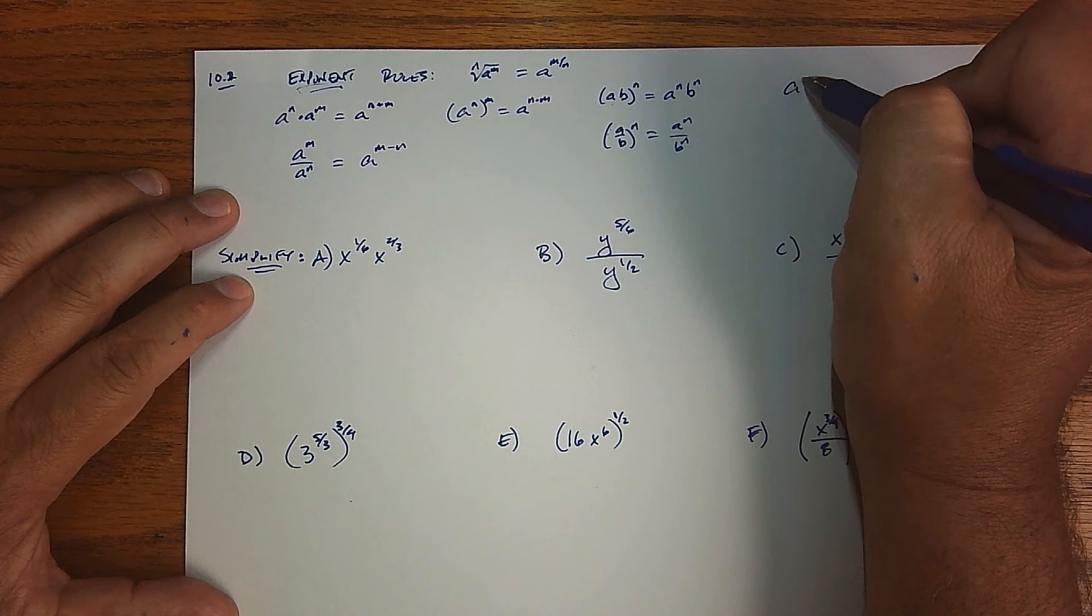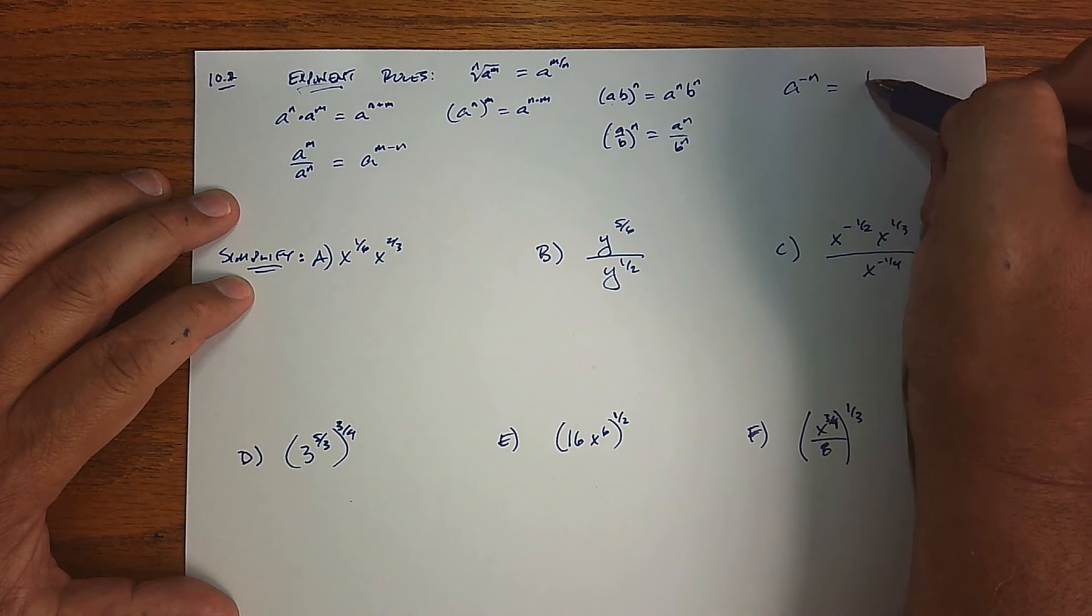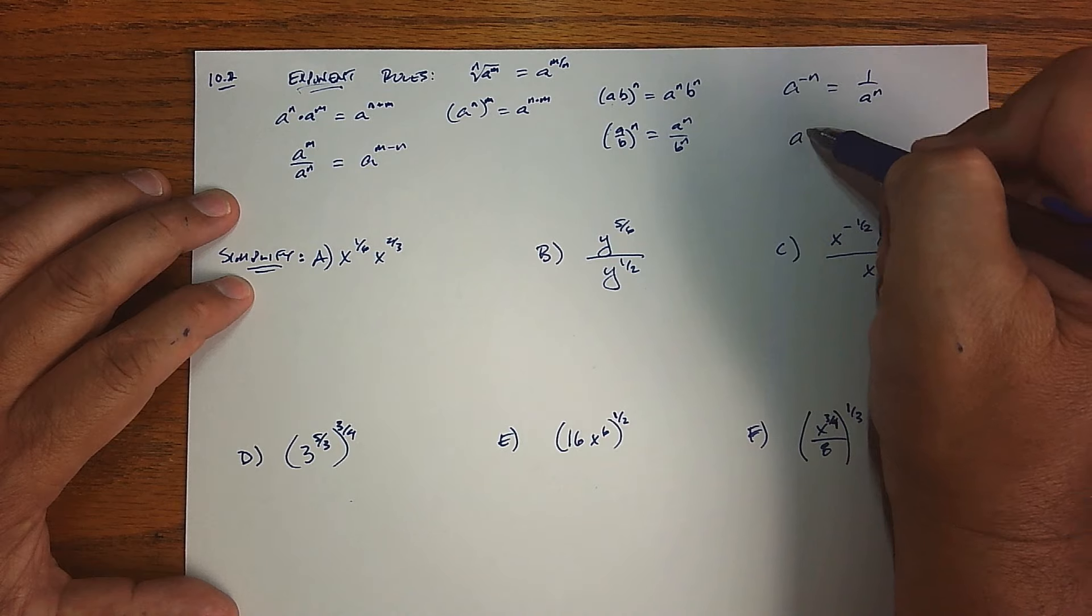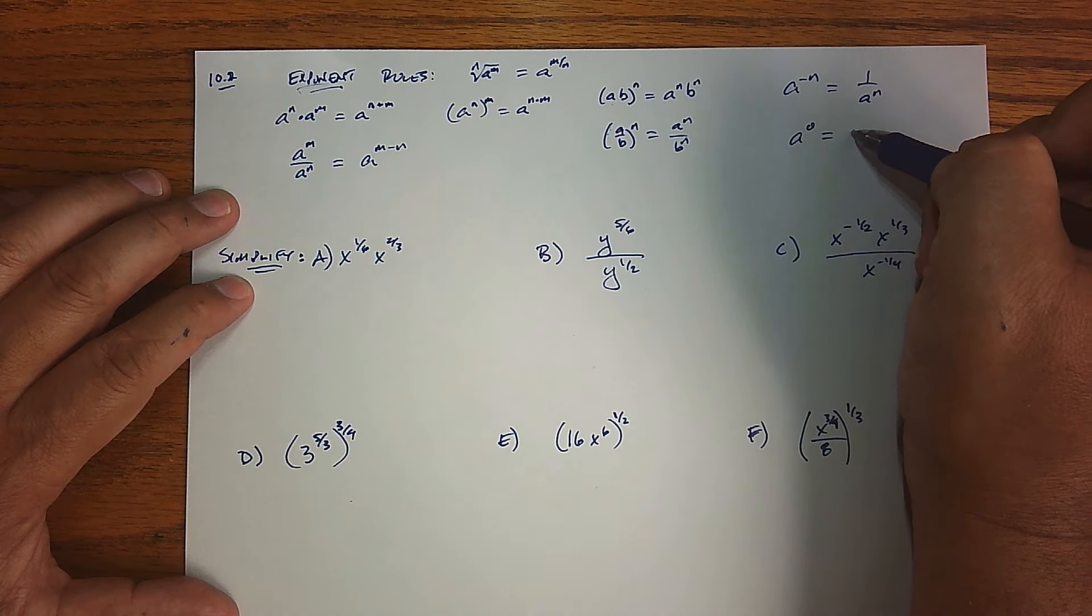And then we had the negative exponent rule, right? So if we have a negative exponent, that's just one over a to the n. And of course, we had a to the zero, which was just one.